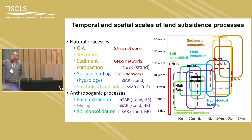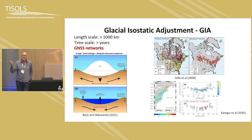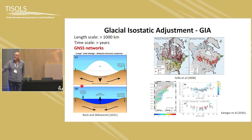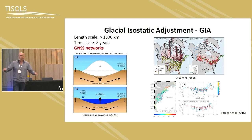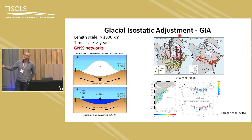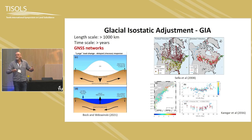For Glacial Isostatic Adjustment (GIA), it's the mantle's response to ice load changes from ice ages. Ice weight suppressed the crust, moving the mantle sideways. When ice melted, there's rebound. We see uplift in formerly glaciated areas, but in the peripheral bulge we have the opposite — subsidence — which contributes to sea level rise. Because this is a long-wavelength signal, GPS networks are needed.